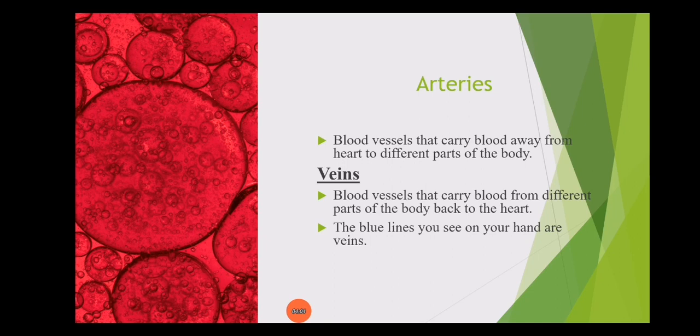Arteries carry oxygenated blood — fresh blood. Arteries carry the oxygenated, fresh, oxygen-rich blood. Next, we have the veins. The veins are the blood vessels that carry blood from different parts of the body back to the heart.